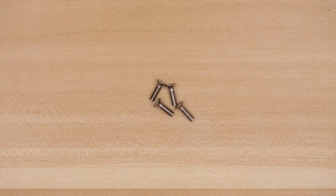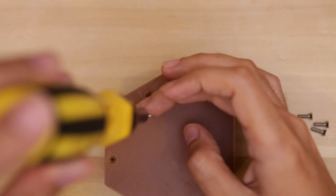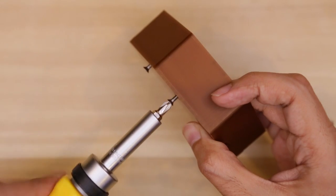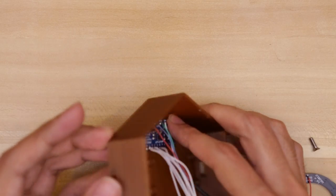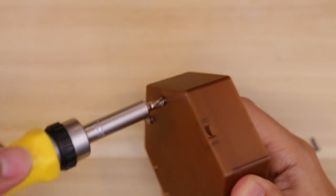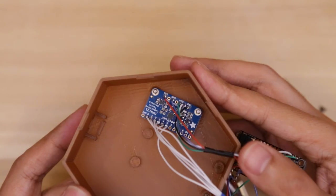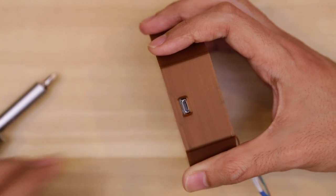These machine screws will secure the components to the enclosure. I inserted the machine screws through the bottom to tap the standoffs. I fastened them about halfway and placed the PCB over the standoffs, held it in place while I screwed them in all the way. I repeated this process for the Adafruit Feather.